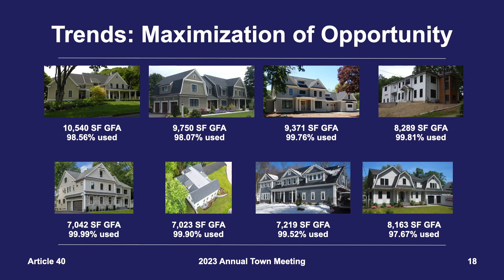Another significant trend is that of maximization of opportunity when new development takes place. Many new homes built are being architecturally designed in such a way so that they can make use of almost all of the allowable GFA afforded by the lot. Several examples built in Lexington over the last few years illustrate GFA utilization of 97% to almost 100%, including one house built to 99.99% — just one square foot less than the maximum allowable GFA.